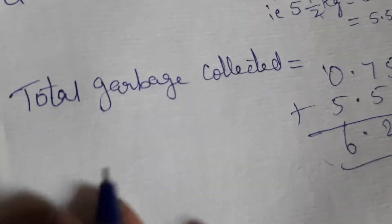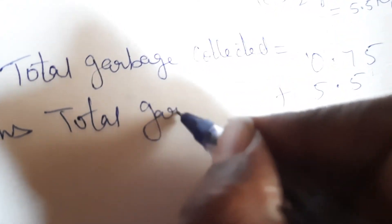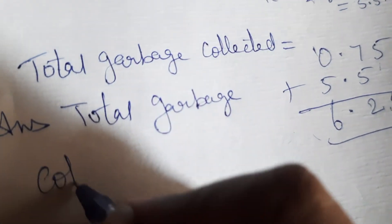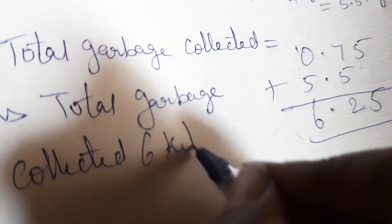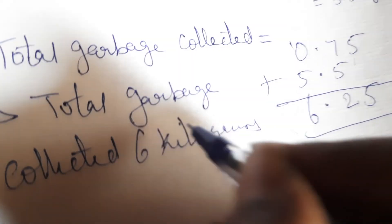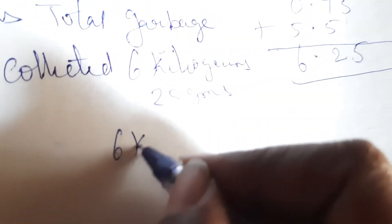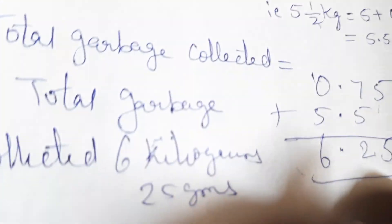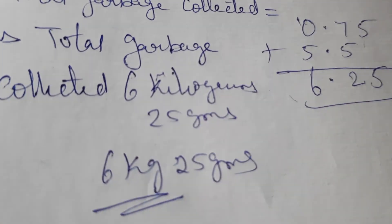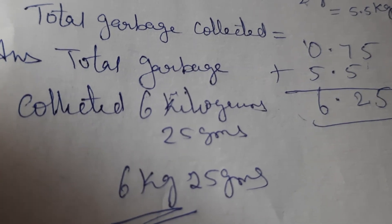So the total garbage collected by the students. Final answer write down. Total garbage collected. There is 6 kilograms 25 grams. Okay. You can write in short form. 6 kg 25 grams children. Okay. Now the remaining sums we will continue in the next video. Thank you children. Have a great day.